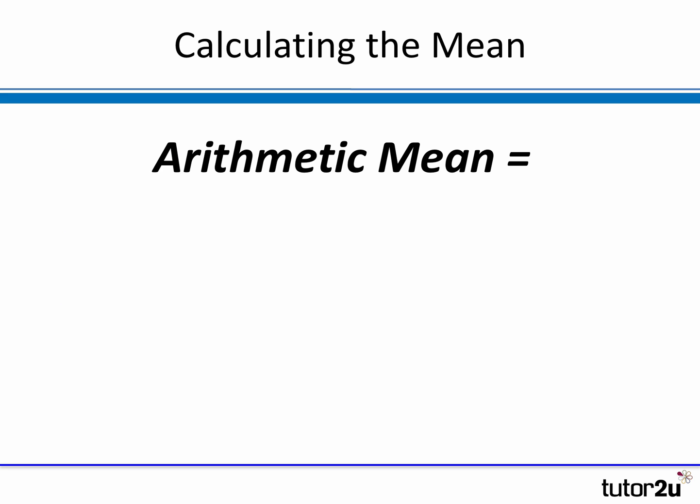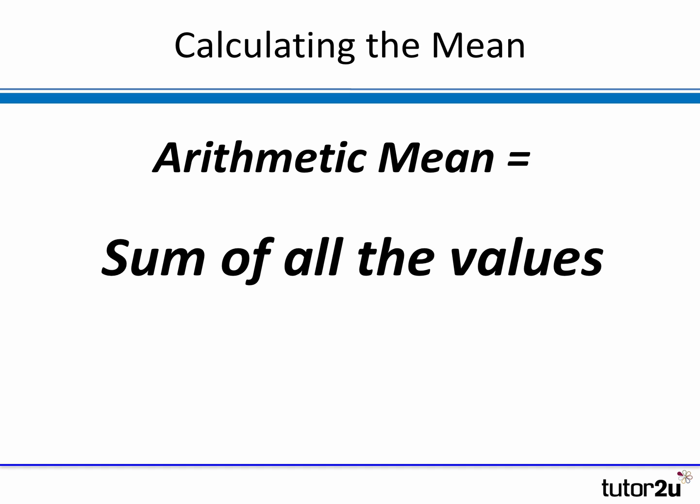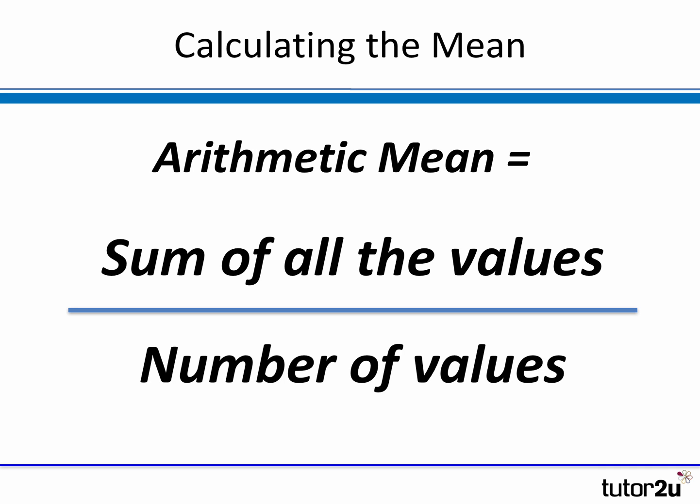How to calculate it then? Well, the arithmetic mean is a really simple calculation, but you need to be confident in remembering how to do it. The formula is that you add up all the values that you've observed — all the values in your sample of data — and divide them by the number of observations or the number of values.